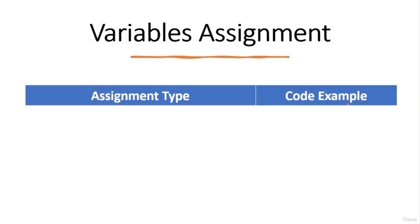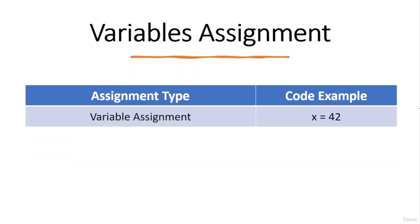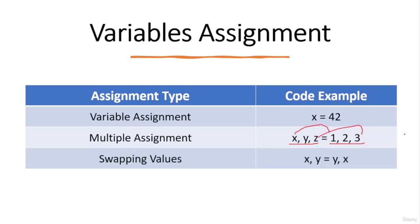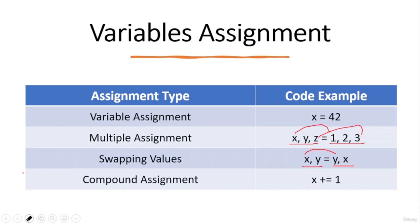Variable assignment is the process of giving a value to a variable, allowing you to store data in a named location which you can later access and manipulate. In Python you can assign a value using the assignment operator. For example, single variable assignment, multiple assignment where 'x, y, z = 1, 2, 3', value swapping where 'x, y = y, x', and compound assignment where 'x += 1' is equivalent to 'x = x + 1'.